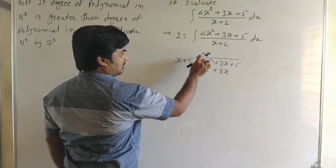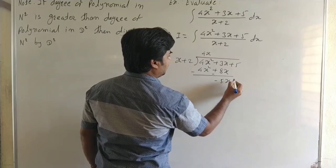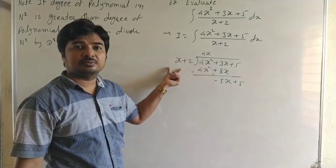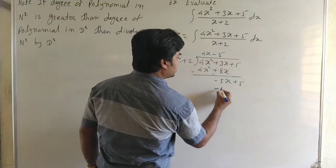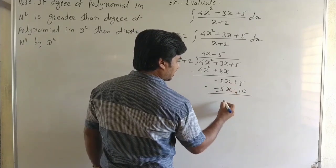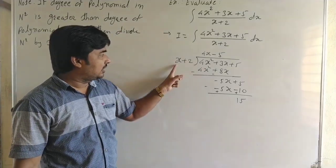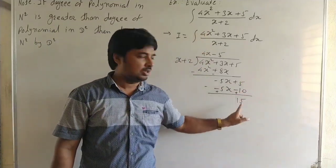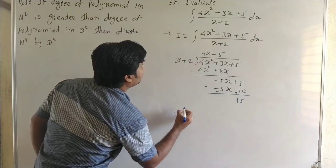We multiply 4x by (x + 2) to get 4x² + 8x. Now subtract: 4x² cancels, giving −5x. Bring down +5. Now −5x divided by x gives −5, so we multiply −5 by (x + 2) to get −5x − 10. Subtracting: −5x cancels, and 5 − (−10) = 15. The remainder is 15, which has degree 0, less than the divisor's degree of 1.